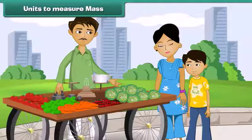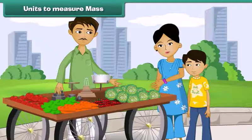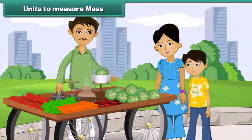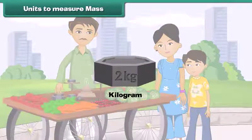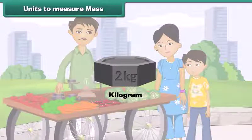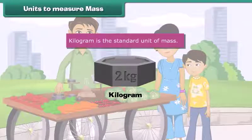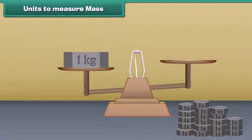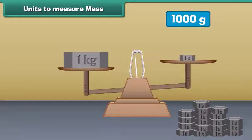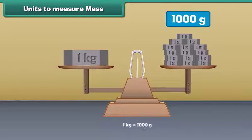You might have gone with your mother to buy vegetables. You must have heard her asking for 1 kilogram cabbage, 5 kilograms potatoes, 100 grams green chili, etc. Kilograms and grams are the two units used for measuring mass, among which kilogram is the standard unit. If one kilogram is divided into 1,000 parts, then one part is called a gram. So one kilogram is equal to 1,000 grams.